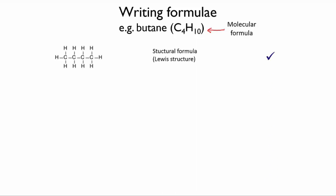Here, each line represents a covalent bond with two electrons shared between the two atoms. This is the most explicit way of drawing the structure of an organic molecule.